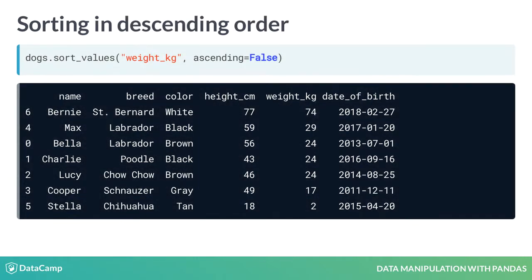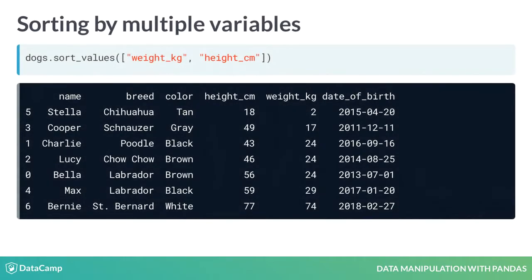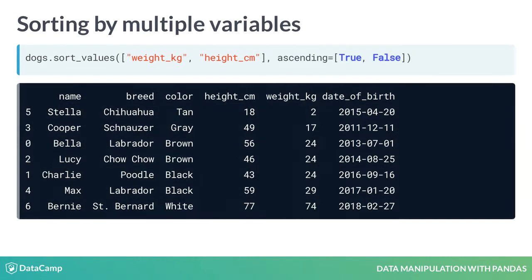Setting the ascending argument to False will sort the data the other way around, from heaviest dog to lightest dog. We can sort by multiple variables by passing a list of column names to sort_values. Here we sort first by weight, then by height. Now Charlie, Lucy and Bella are ordered from shortest to tallest, even though they all weigh the same. To change the direction values are sorted in, pass a list to the ascending argument to specify which direction sorting should be done for each variable. Now Charlie, Lucy and Bella are ordered from tallest to shortest.